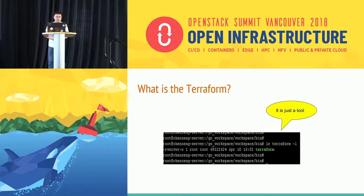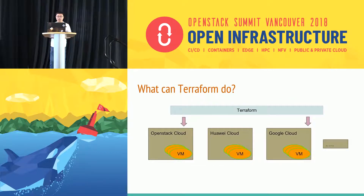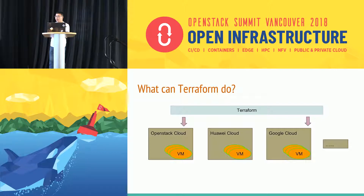If you're hearing about Terraform for the first time, the first question may be: what is it? It's not very mysterious — it's just a tool. What can Terraform do? The most obvious characteristic of Terraform is that it can manage multiple clouds, and at the same time you can create virtual machines and other resources simultaneously. Think of the scenario where you create 100 virtual machines on two clouds at the same time — it would be a nightmare if you did it manually. But for Terraform, it's not.